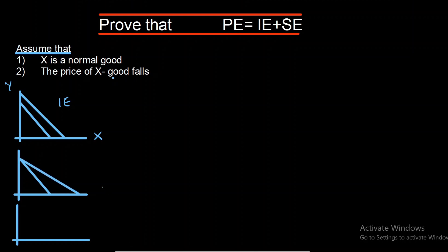When price of X falls, the purchasing power of the consumer increases for X good from A to A1, while purchasing power for Y good remains the same. So price effect is when two lines are pivotal to each other — there is no change on one axis and the other axis changes. The third thing is substitution effect, where we assume X good is on the X axis and Y good is on the Y axis.